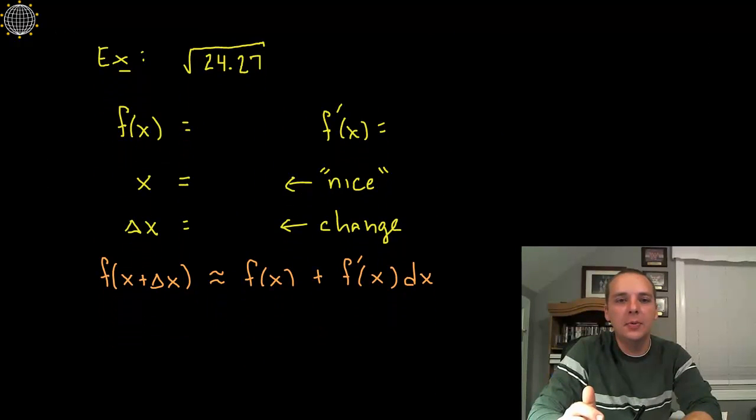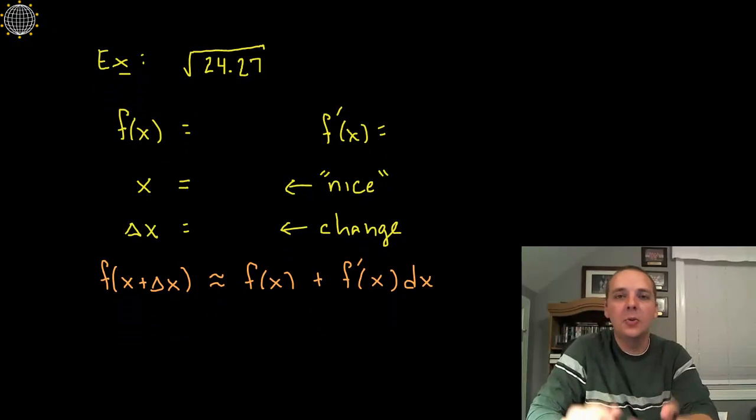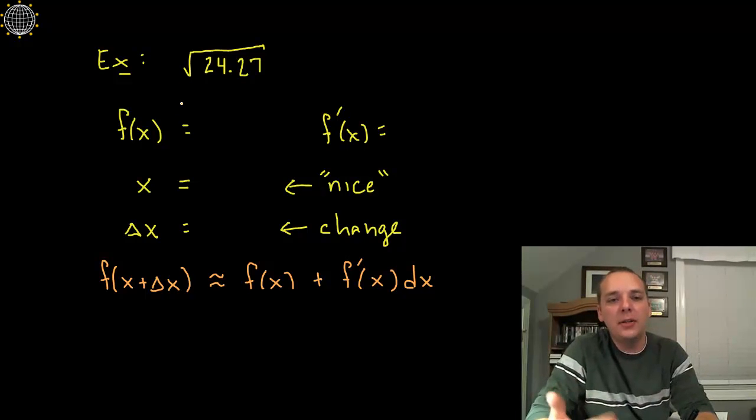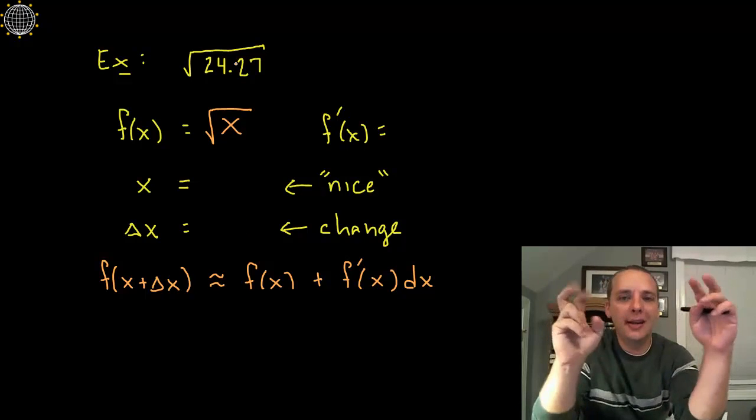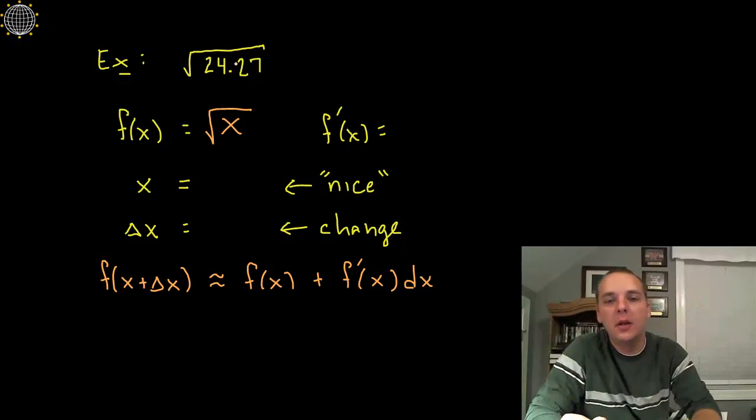So let's close out this video with an example here. Let's say we want to take the square root of 24.27 without a calculator, other than just basic arithmetic, not to actually do the square root of 24.27. That sounds really tough, I have no idea what this value is going to be. I know it might be around 5 because I know the square root of 25 is 5 and that's close to 25, but that's not good enough. So what operation is being done here? Well obviously square root, so our function is going to be the square root of x. Now look at this number, what's your nice x value around 24.27? It would be 25 I think. I would not mind taking the square root of 25.